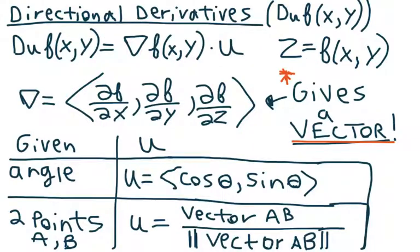Now let's move on to directional derivatives. A directional derivative — generally how it's going to be given — you're given a function in terms of x and y's, and they're going to tell you to find the directional derivative. You're either going to be given an angle, or two points a and b. To find the directional derivative, first you want to calculate the gradient — this little upside-down triangle. The gradient is a vector whose x component is ∂f/∂x, whose y component is ∂f/∂y, and whose z component is ∂f/∂z. If we're working in x and y, we won't have a z component. The gradient is always a vector.